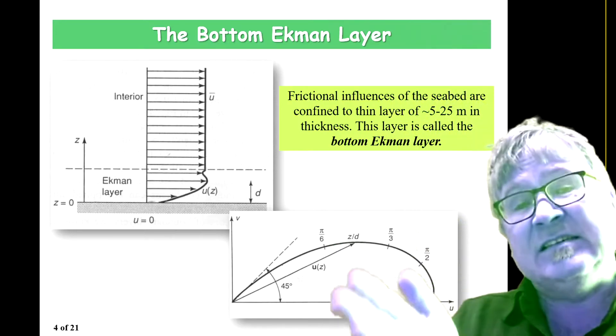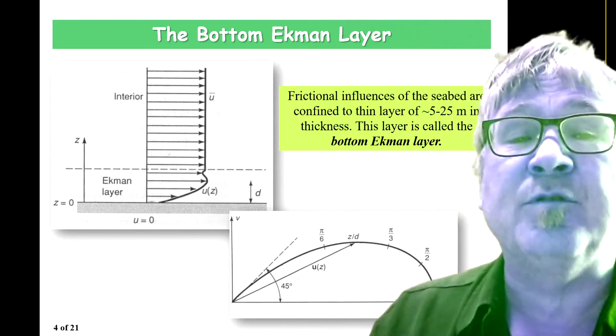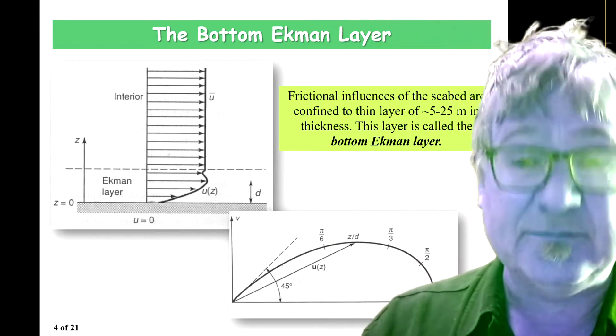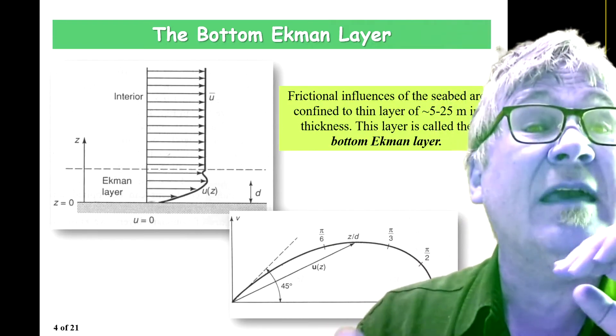And this is a bottom Ekman layer. The thickness varies. It's up to 25, 30 meters. That's the thickness of that. And we come back to that.